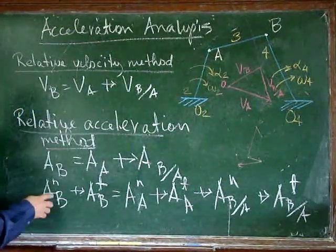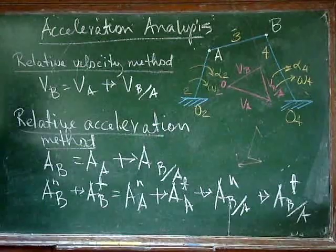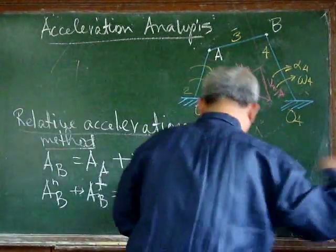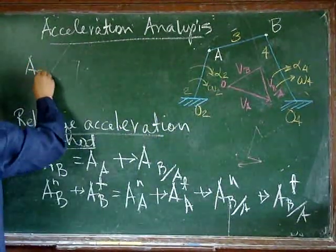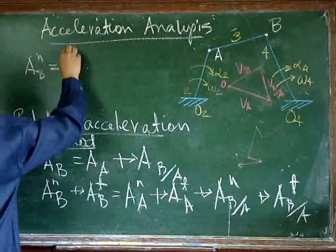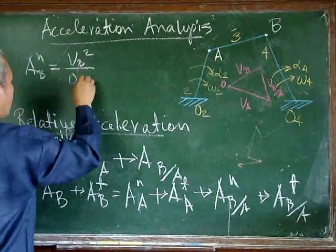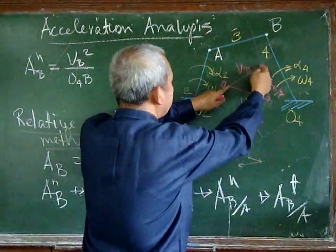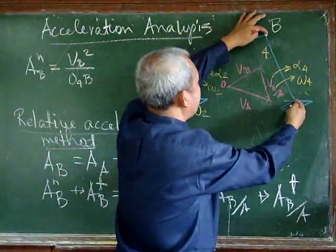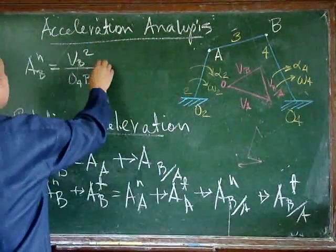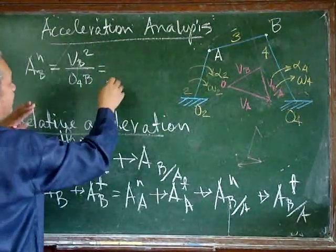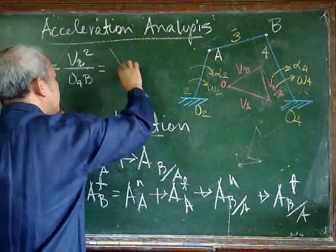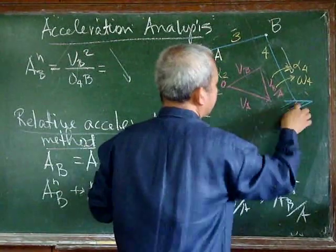The normal acceleration of B is given by the velocity of B squared over the distance O to B. We know this velocity of B, particularly from link 4, so we know this magnitude. We know it tends toward the axis of rotation, so we can determine the magnitude.